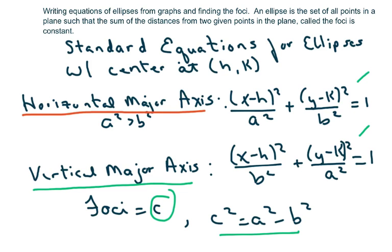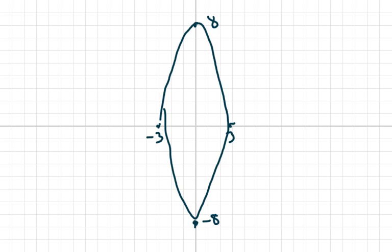We call the major axis and minor axis. So here's my ellipse. You can actually call it a standing up egg. I call it a standing egg or a sleeping egg. This one's standing up. My center's at 0, 0.